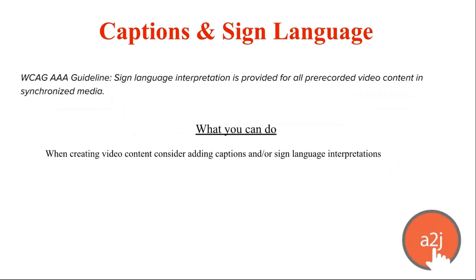Along the same lines, the WCAG AAA guidelines — the best of the best — state that you should also provide sign language interpretation for all pre-recorded video content. What you can do as authors is, when creating any video content — still pretty rare in A2J Author — consider adding captions or sign language interpretations. Captioning is fairly easy: if you upload through YouTube, they have captioning services you can edit. It's also a great way to use intern time to have them caption the videos.